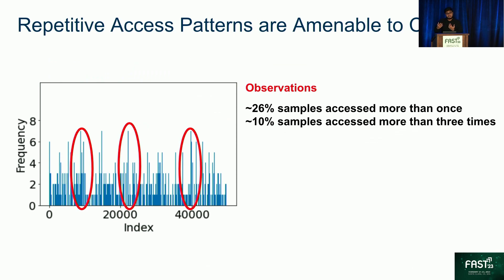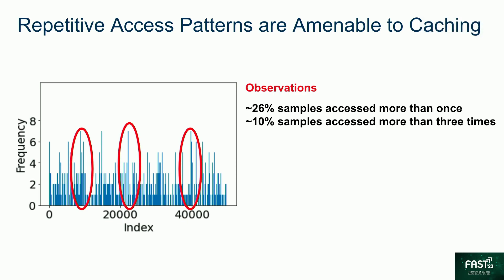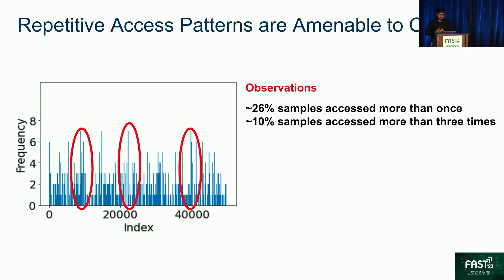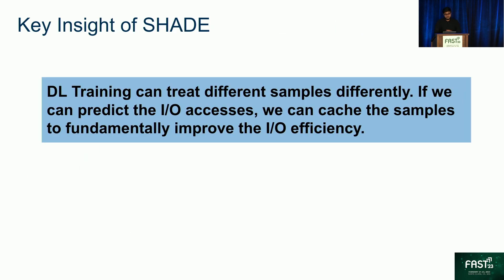Since important sampling trains more on these hard-to-learn samples, there are some repetitions in the data sample access pattern. This figure shows the data sample access pattern we obtained when we trained the ResNet-18 model on the CIFAR-10 dataset. As you can see, some samples have been accessed more than once. The x-axis denotes the sample index number and the y-axis denotes the number of times the sample has been accessed. In particular, 26% of samples have been accessed more than once, and 10% have been accessed more than three times. This leads us to the key insight of Shade: DL training can treat different samples differently. If we can predict those I/O accesses, we can cache those samples and fundamentally improve I/O efficiency.